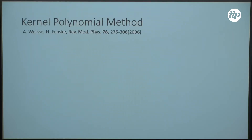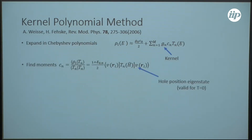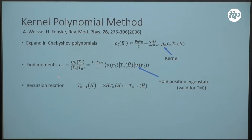We implemented a code based on the kernel polynomial method. That means we expand some observable in Chebyshev polynomials — in our case, the local density of states, with which we can get the particle density needed for the Hartree potential. Basically we have to calculate matrix elements where we have the Chebyshev polynomial in the middle, which is matrix-valued. The nth Chebyshev polynomial is a polynomial of order n, so we need n matrix-vector multiplications of the Hamiltonian with a vector. Through the recursion relation of the Chebyshev polynomials we can calculate the next moment from the previous one, so in total we only need as many matrix-vector multiplications as the number of moments.